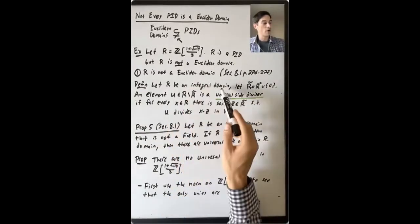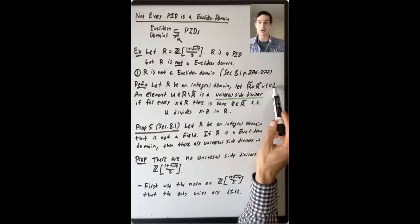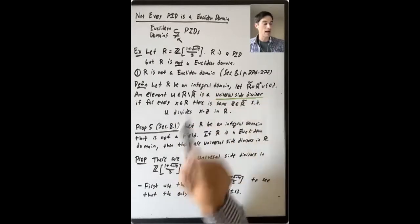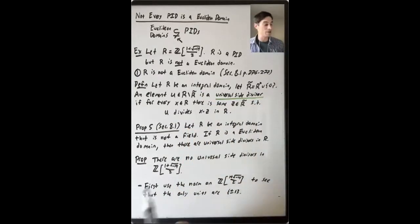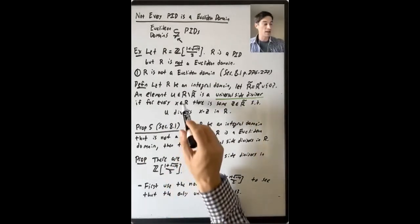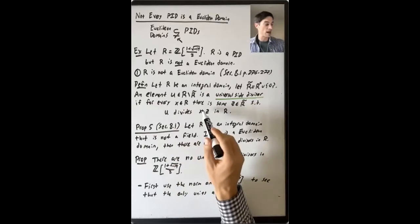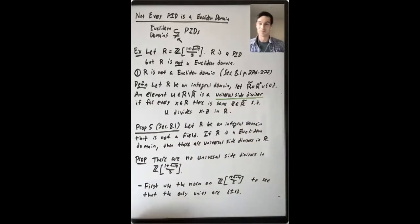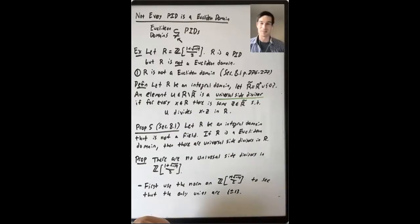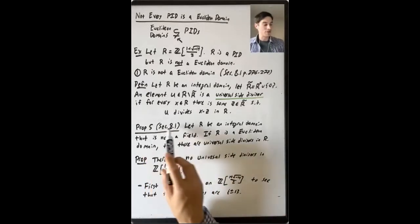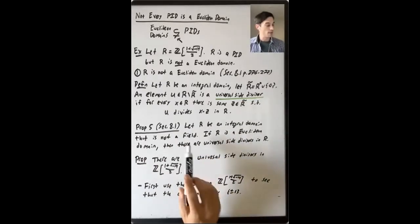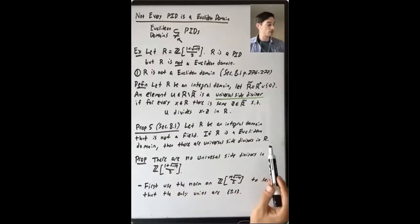So what is a universal side divisor? If R is an integral domain, let's say R̃ is going to be all the units in R together with zero. An element in R minus R̃ — so a non-zero element that's not a unit — is called a universal side divisor if for every element X in the ring, there is some Z in the set of units together with zero such that U divides X minus Z in the ring.